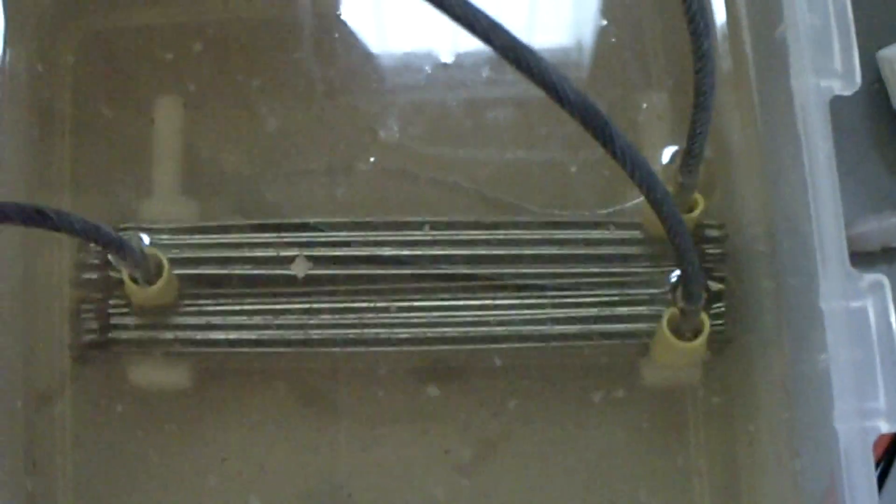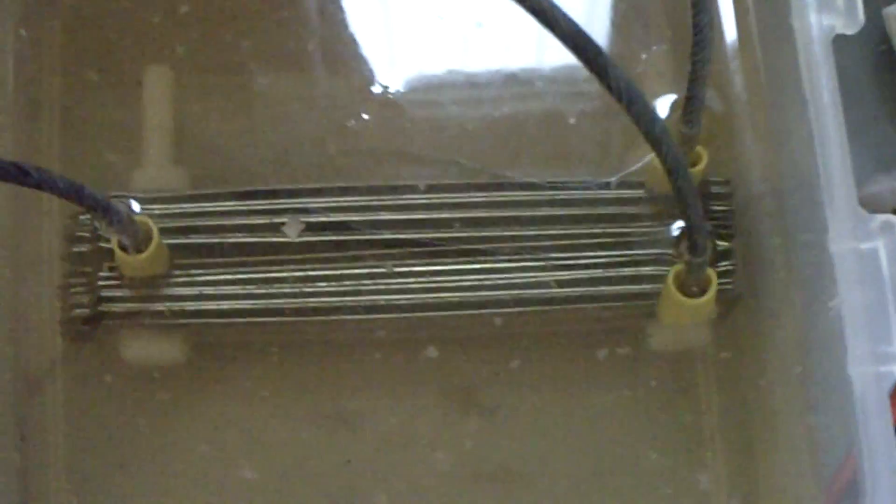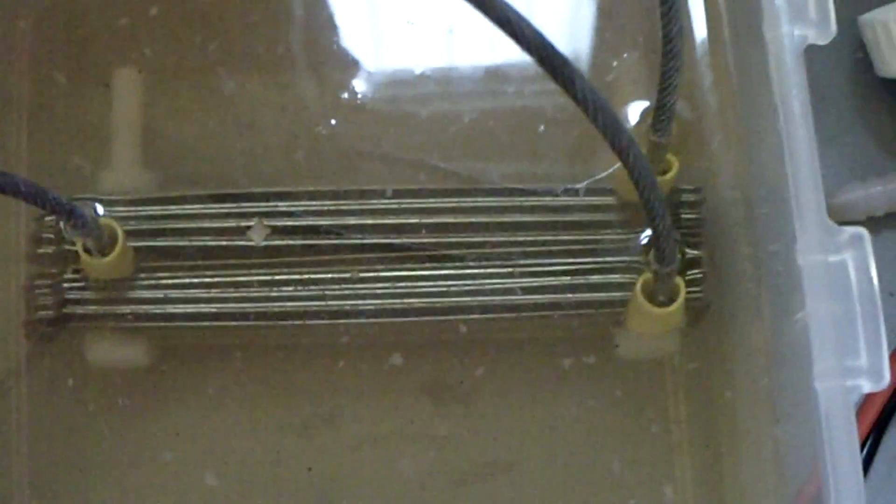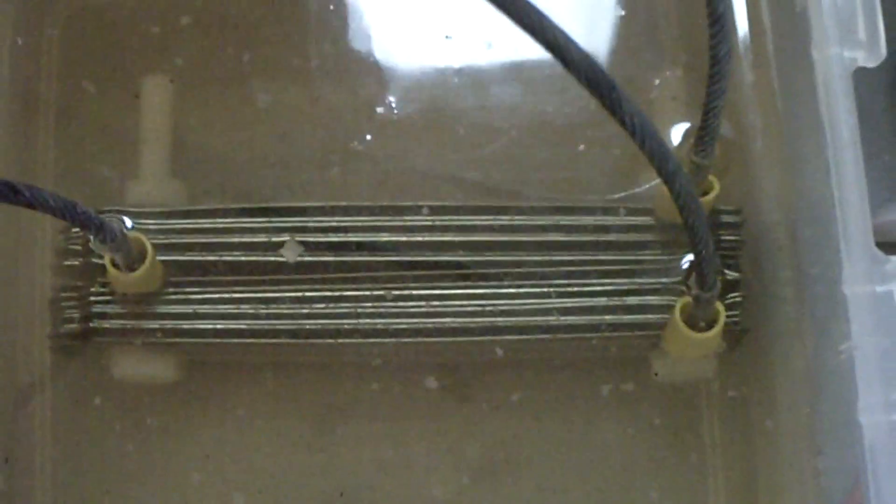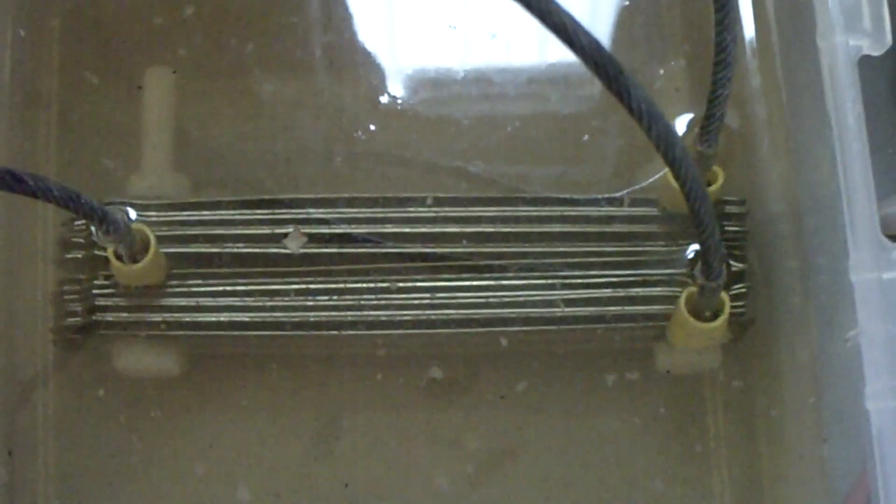I know I had pretty much swore off the wet cells altogether and I was pretty much going to stick to dry cells, but I figured this was an easy build and I wanted to try it out and I'm surprised with the results. So I want to show you guys what the output looks like and what kind of amperage I'm getting off of this.